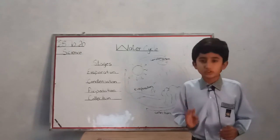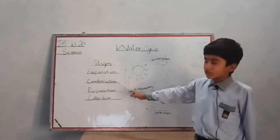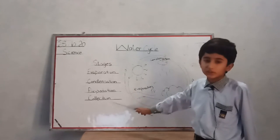The water cycle has four stages. First, evaporation; second, condensation; third, precipitation; and fourth, collection.